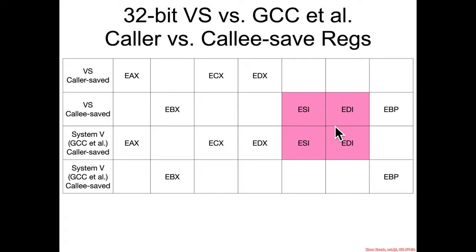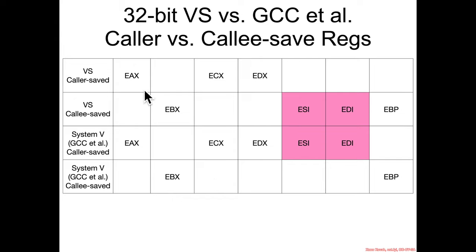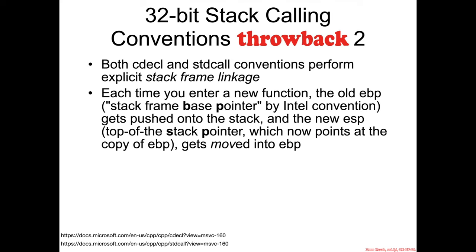These are all the exact same things that you saw in 64-bit: ESI and EDI instead of RSI and RDI. All the same conventions — it's just 32-bit E-register forms instead of 64-bit R-register forms. But here's an interesting difference between the calling convention we've seen on Microsoft Visual Studio thus far and these 32-bit calling conventions.